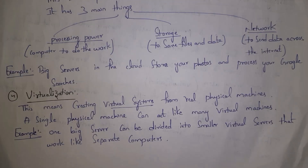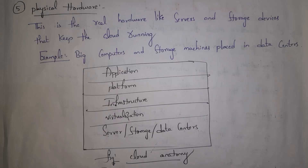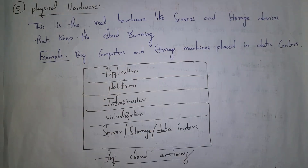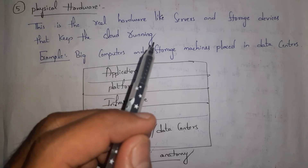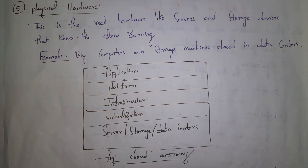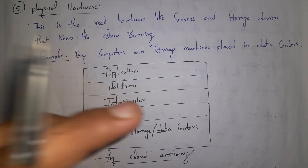The fifth part is physical hardware — real hardware like servers and storage that make the cloud work. In the cloud, physical hardware is present in data centers — big computers and storage machines placed in data centers. This is all about the anatomy of the cloud.